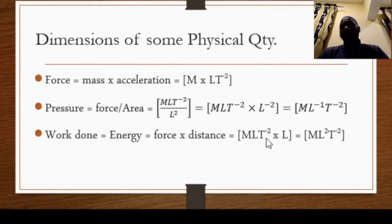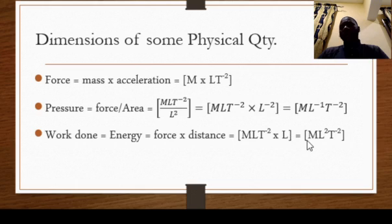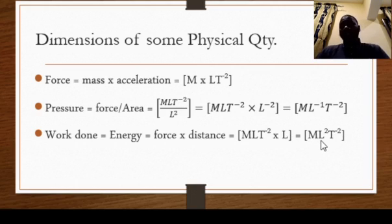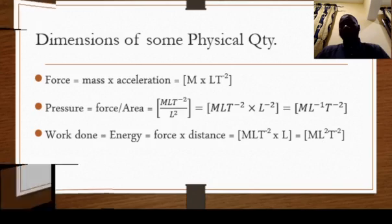Multiplying force [MLT⁻²] by distance [L], the L indices add: 1 + 1 = 2, giving the dimension of work done and energy as [ML²T⁻²]. So these are the dimensions of some quantities.